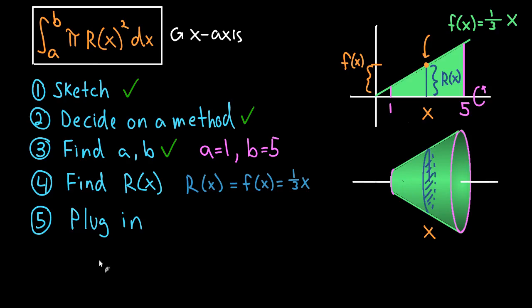Okay, so let's plug in here. We do the integral from a, which is one, to b, which is five, of π times r(x) squared. In this case, r(x) is just (1/3)x, and we have to square that, dx.